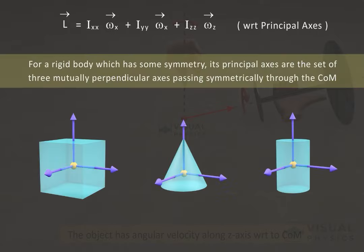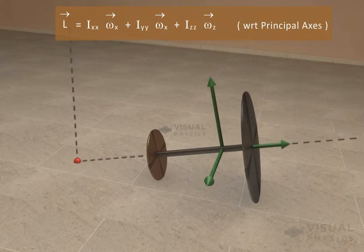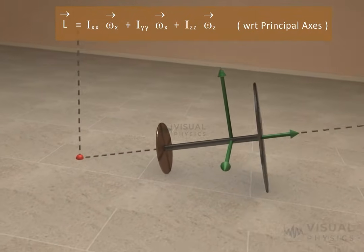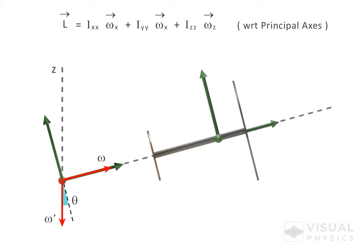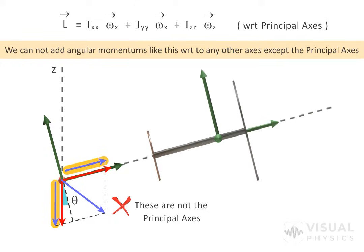For a rigid body which has some symmetry, its principal axes are a set of three mutually perpendicular axes passing symmetrically through the object's center of mass. For the given situation, we can consider the principal axes as shown. Here we can see that this angular velocity is not along the principal axes, so we will need to resolve this angular velocity along the principal axes to use this equation. Please note that we cannot consider the angular momentum along arbitrary axes and then add them vectorially, because those axes are not the principal axes. We cannot add angular momentums this way with respect to any other axes except the principal axes, so this approach is valid only for the principal axes.